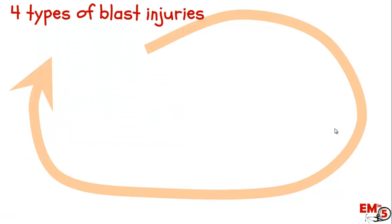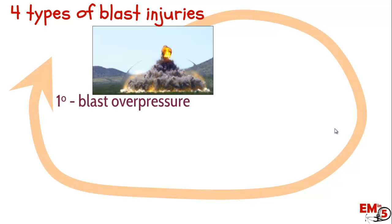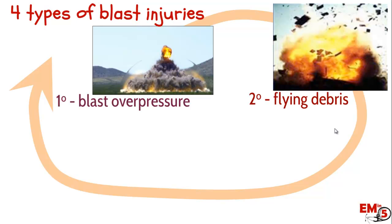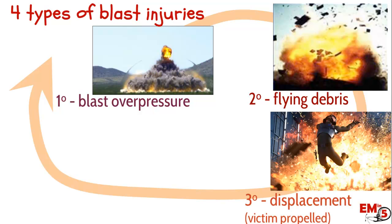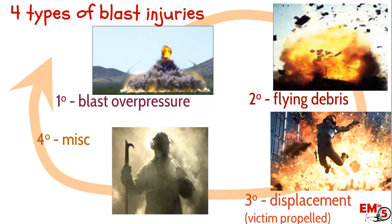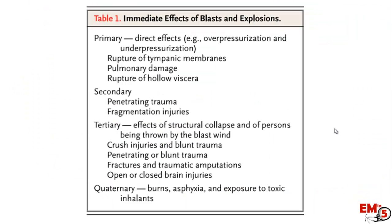There are four types of blast injury categories. We have primary, which is from the blast shock wave or overpressure; secondary, which is from flying debris; tertiary, in which the victim themselves gets displaced; and then quaternary, which is kind of a miscellaneous category. Each of these categories can cause various different injuries.